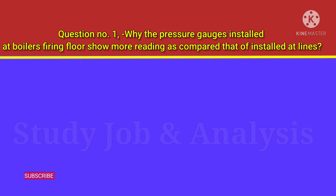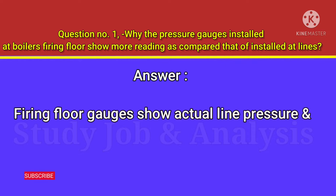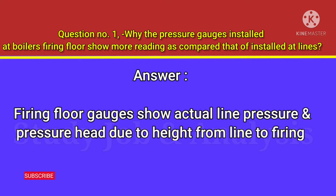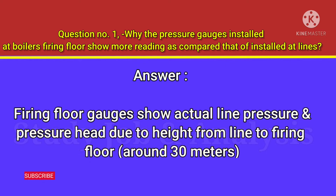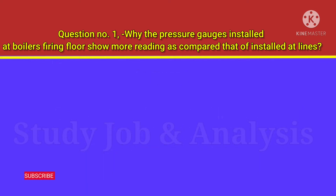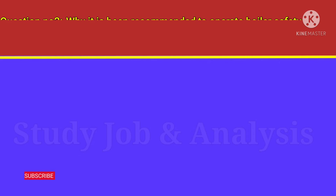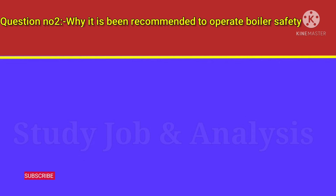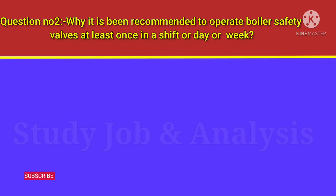Answer: Firing floor gauges show actual line pressure plus pressure head due to height from the line to firing floor, which is around 30 meters. Question number two: why is it recommended to operate boiler safety valves at least once in a shift, day, or week?